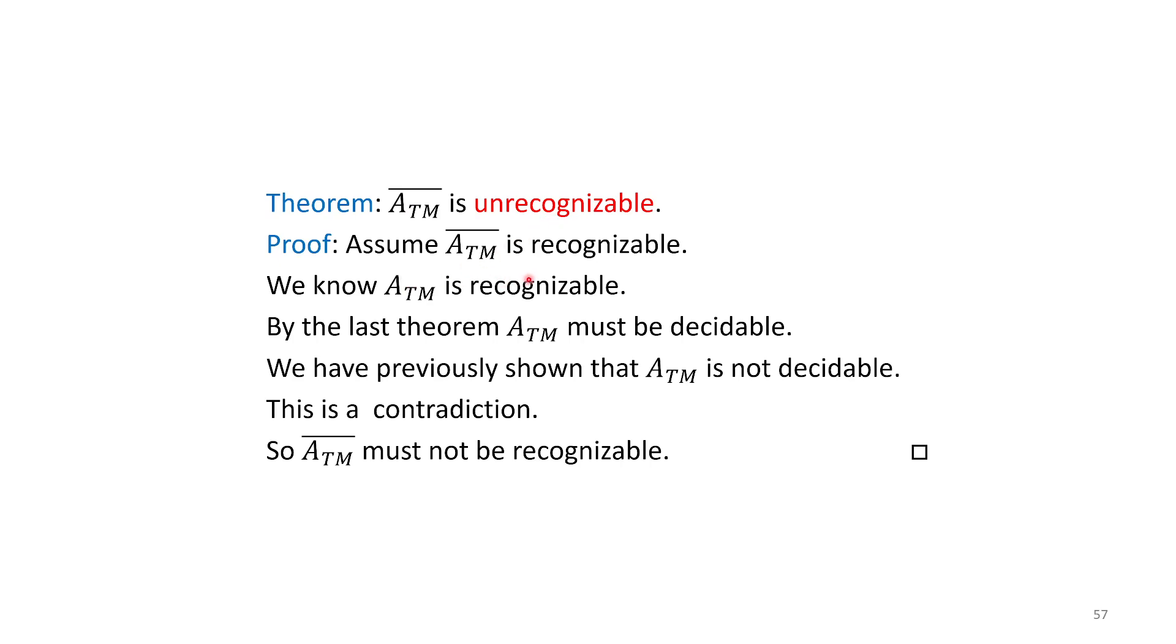Let's do a quick proof by contradiction. Assume it is recognizable. We know ATM̄'s complement is also recognizable. From that last theorem, that means ATM must be decidable. But from our previous theorem, ATM is not decidable. That's our contradiction. These two contradict each other. So ATM̄, the complement of ATM, must not be recognizable.